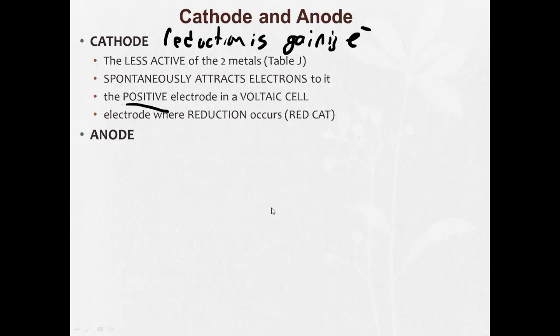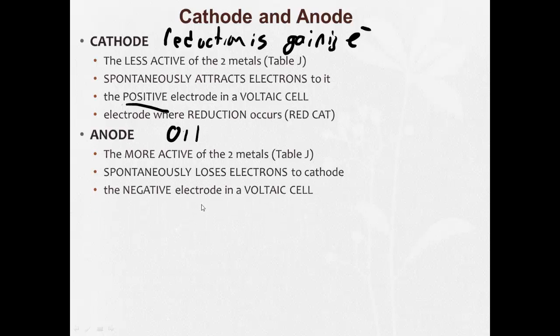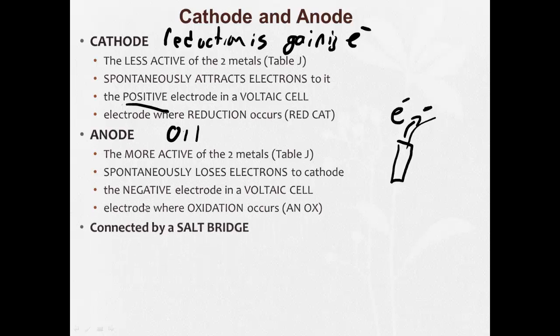Anode is the more active of the two metals. Oxidation occurs spontaneously, loses electrons. Oxidation is losing. And it is the negative electrode in a voltaic cell. Because if you figure, if here's an electrode and a wire going out, and it is losing electrons, electrons are negative, so this side is going to seem negative. Oxidation occurs here.